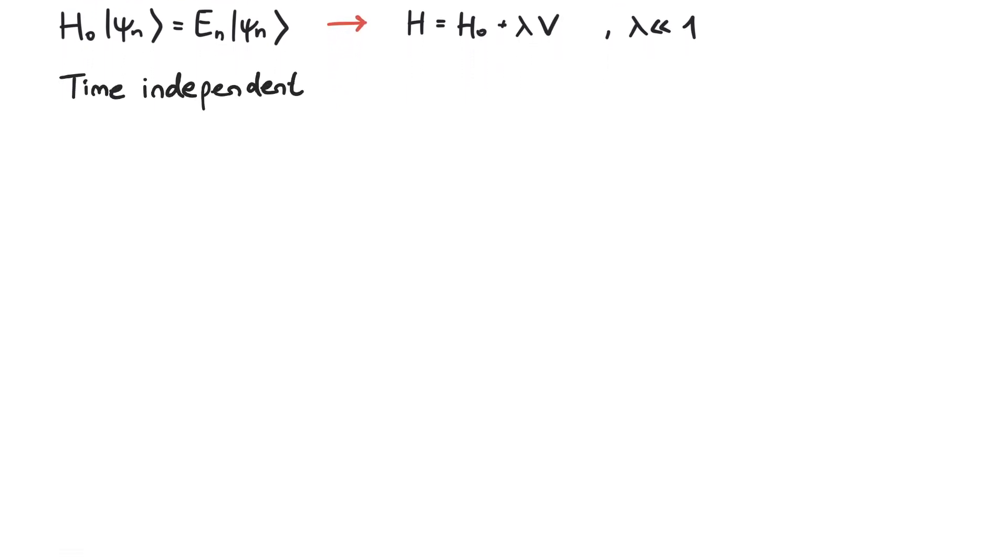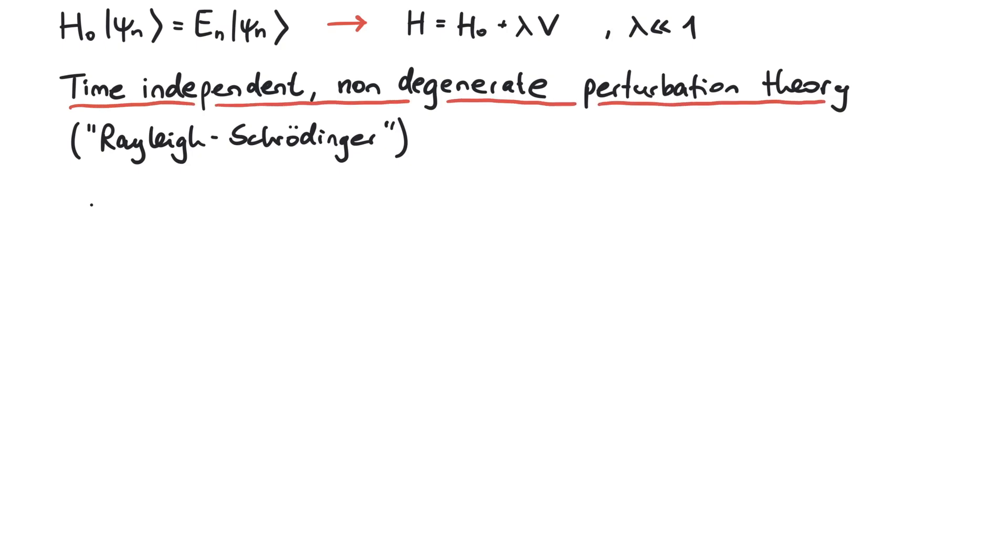First off, standard time-independent, non-degenerate perturbation theory, also known as Rayleigh-Schrodinger perturbation theory. Since lambda is very small, we assume that we can write the energy eigenvalue of the whole system as a power series.